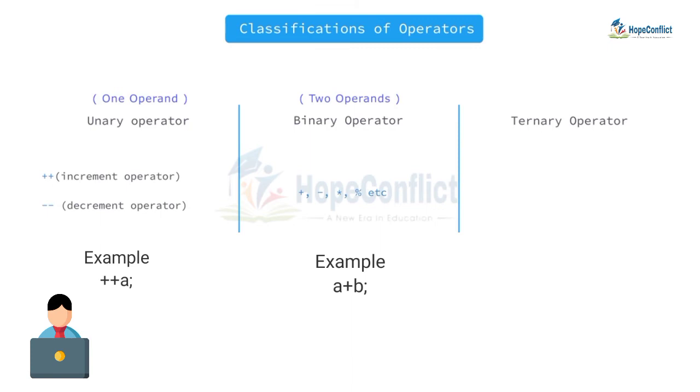Next is ternary operator. Here to perform calculation you need three operands. This is an example for that which is called the conditional operator in C. See this example: a is greater than b, print a, print b. It works like if a is greater than b, then print a, else print b. So these are the three types of operators.